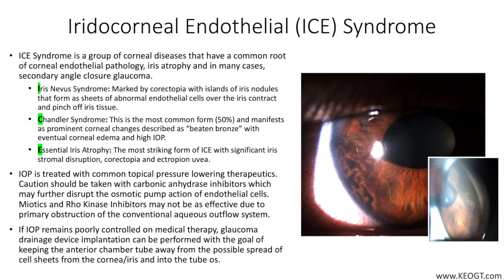As iris changes progress, slit lamp examination may reveal corectopia, which is displacement of the pupil from normal position, ectropion uvae, which is anterior exposure of the posterior pigmented part of the iris, and iris atrophy. Gonioscopy may reveal peripheral anterior synechia, or PAS, described as high and with connections going anterior to Schwalbe's line, and iris surface changes are linked to contraction of the sheets of migrating cells.